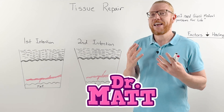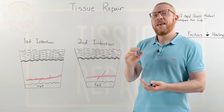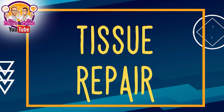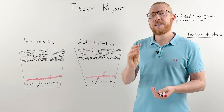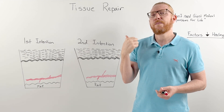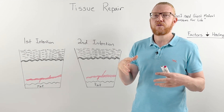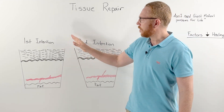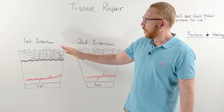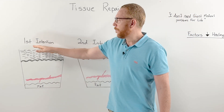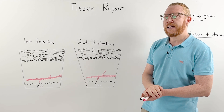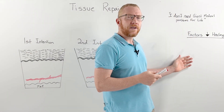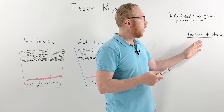Hi everyone, Dr. Matt here and in this video we're going to cover the topic of tissue repair. We're going to cover three main things: firstly, what the body does immediately after injury to try to repair, regenerate, and fix itself; number two, wound healing at the skin by first intention and second intention healing; and finally, what factors slow down or decrease the quality of wound healing.